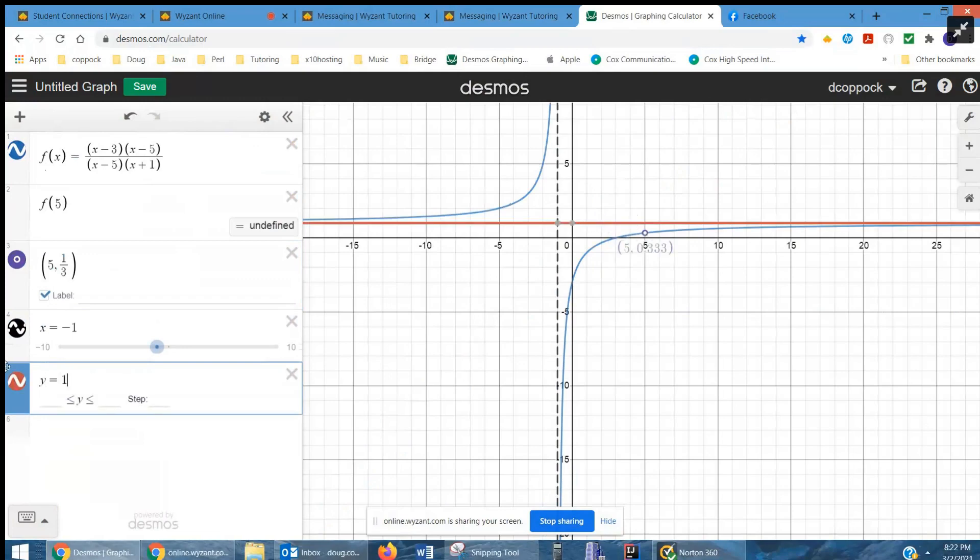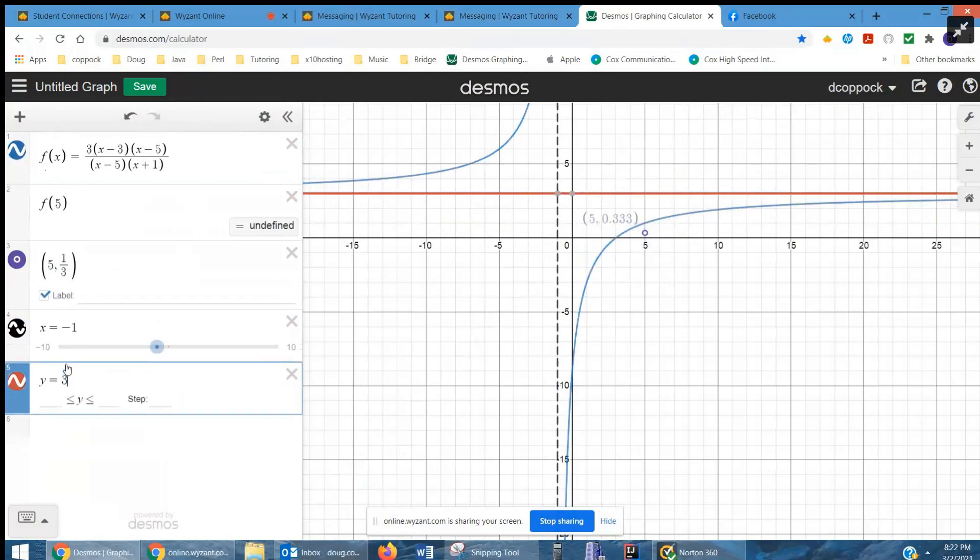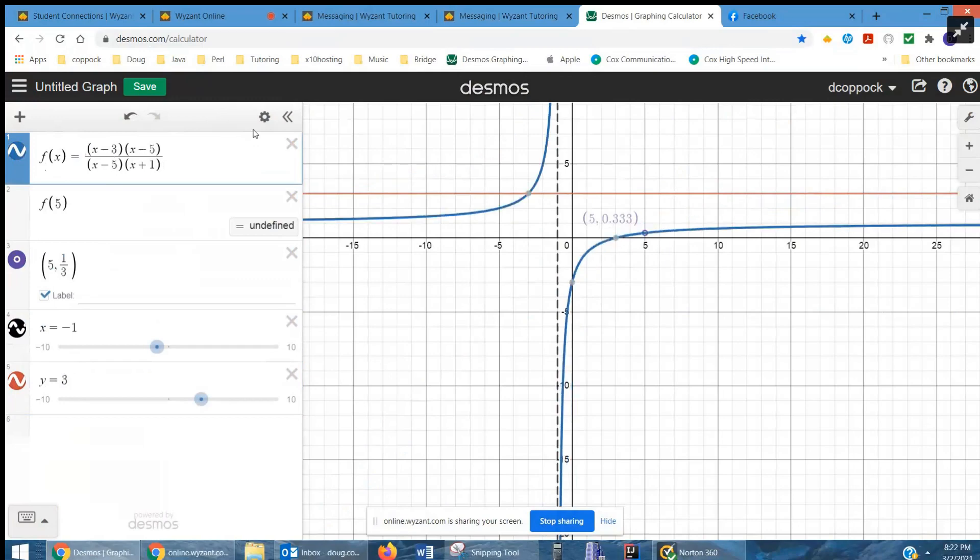There it is, because the coefficients of the x squared terms will be a 1 over 1. But if I put a 3 here, the horizontal asymptote changes to y equals 3. And I'll bet if I wanted to, I could put a 3 here also.